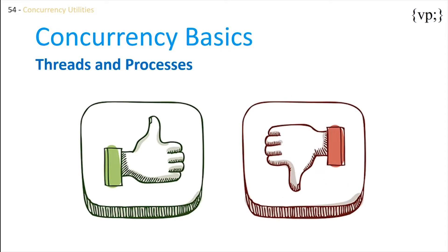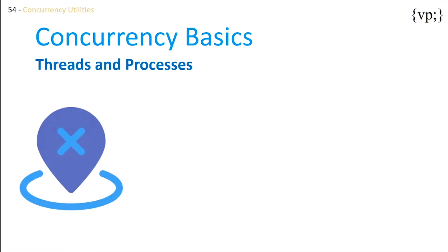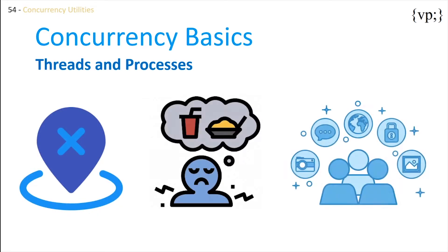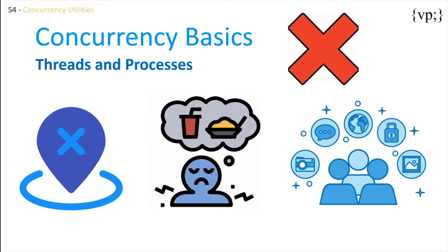There are a lot of pros and cons of using concurrency in our programs, but a few problems that may arise are, for example, deadlocks, thread starvation, concurrently accessing of shared resources, and situations when the program generates incorrect data.